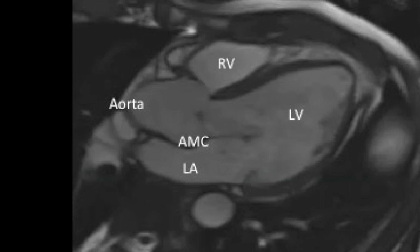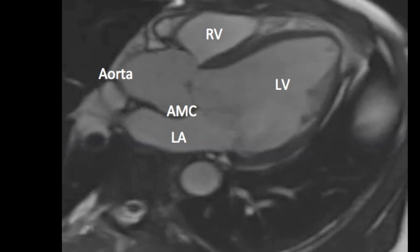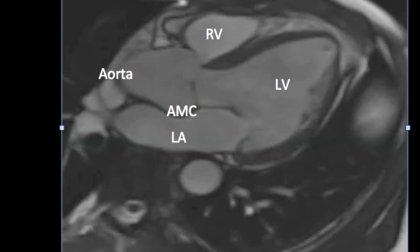On the three-chamber view we can also look at a portion of the right ventricle. Now the pathology seen on this three-chamber view is aortic regurgitation with a regurgitant jet hitting on the anterior leaflet of the mitral valve. That's the answer to the second question.